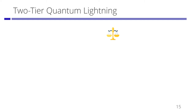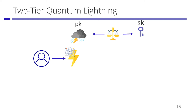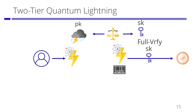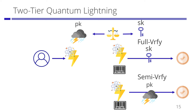We introduce two-tier quantum lightning, which is a relaxation of quantum lightning. In two-tier quantum lightning, an authority generates a public key and a secret key. Anyone who has the public key can generate a bolt, as in quantum lightning. There are two types of verification in two-tier quantum lightning. One is full verification, which needs the secret key. The other is semi-verification, which needs only the public key, so anyone can execute semi-verification. However, only the authority can execute full verification.